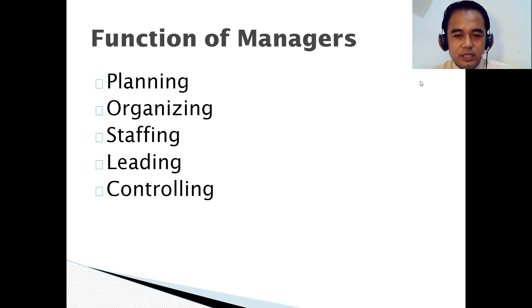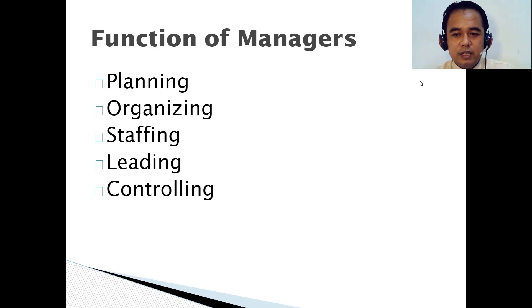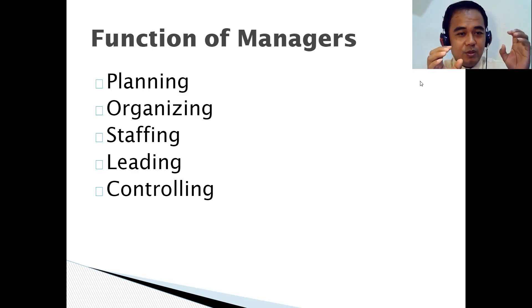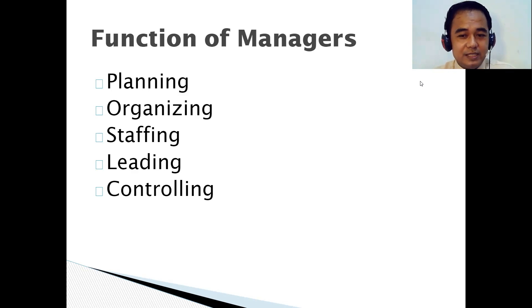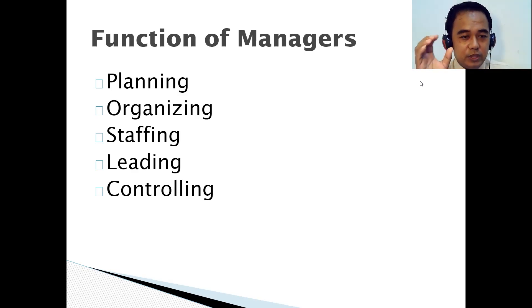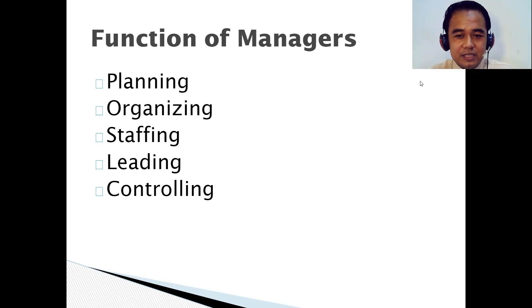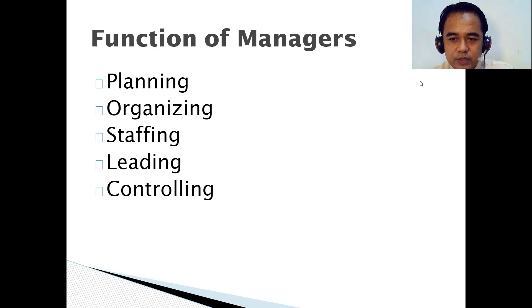For organizing, assigning work and granting authority are two important elements. Assigning work creates jobs and activities. The next step is staffing - filling those positions with qualified people. Staffing involves recruiting, selecting, training, and developing employees. You also need to develop your employees.